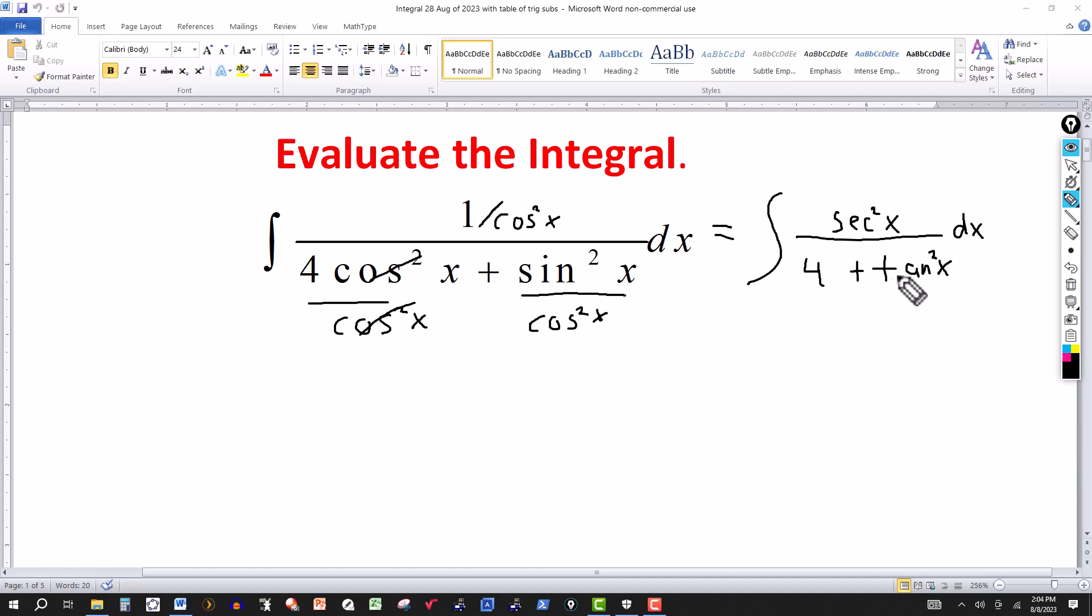And we know the derivative of tangent is secant squared. So I'm going to rewrite this. Do the same thing except a different form here.